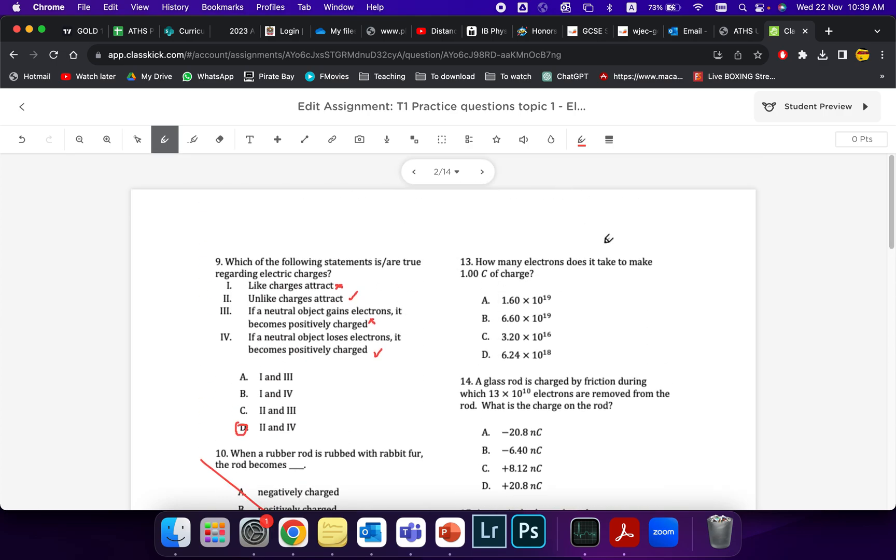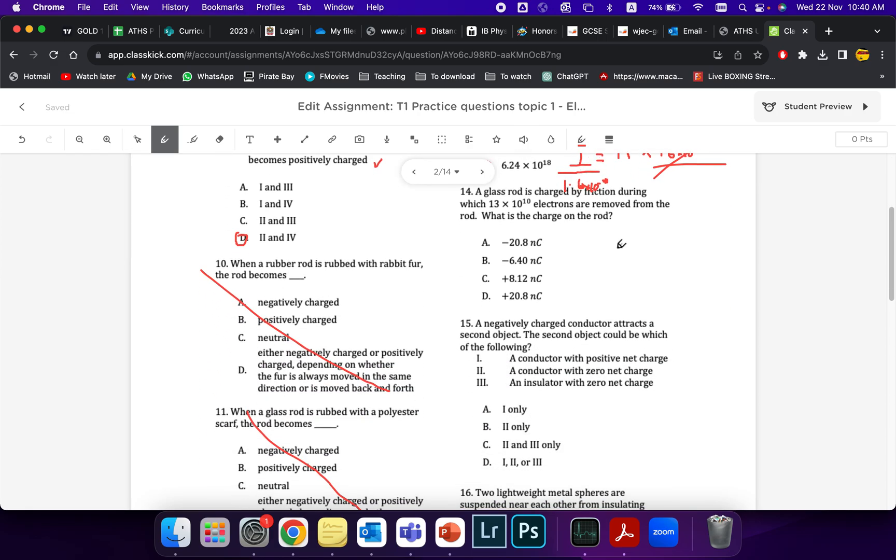Looking on here, how many electrons does it take to make this one coulomb of charge? This is a formula you do need to know. It's a simple one. Q equals N E. In this case, I'm looking for the number. I know I have one coulomb of charge. I'm going to take my number, what I'm trying to find. And I'm going to multiply that by the charge of one electron, 1.6 times 10 to the minus 19. Rearrange that. Once you solve this, you should get 6.24 times 10 to the 18.